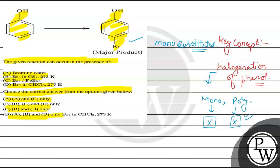So starting from the analysis of each reagent one by one. So when we treat phenol with bromine water, that is Br2,